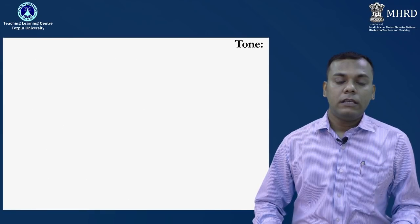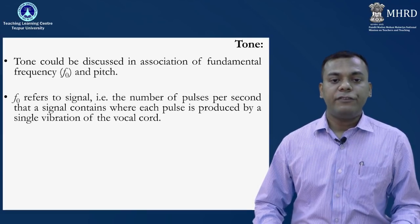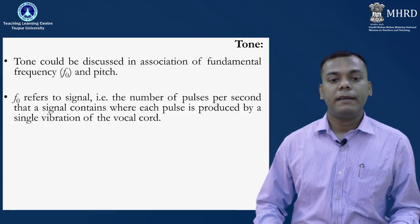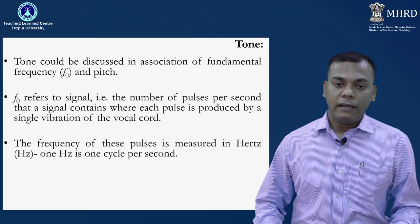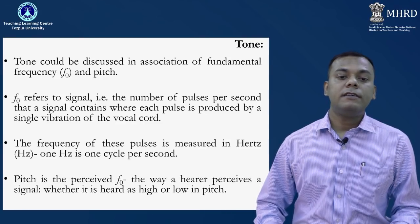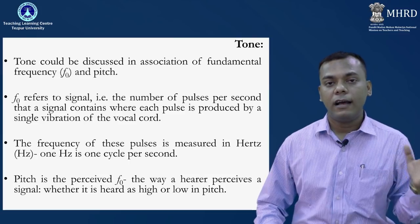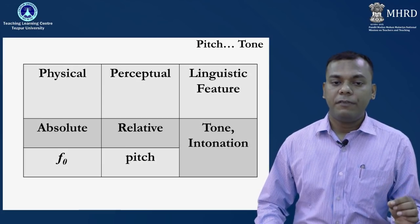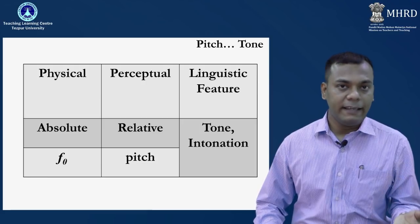We can discuss tone in terms of fundamental frequency and pitch. F0 refers to the number of pulses per second that a signal contains, where each pulse is produced by a single vibration of the vocal cord. Fundamental frequency is measured in terms of hertz — one hertz is one cycle per second. Pitch is the perceived F0, that is, the way a hearer perceives a signal, whether it is heard as high or low. F0 is the physical property which is absolute — you can measure it — and pitch is the relative thing you actually feel and perceive.